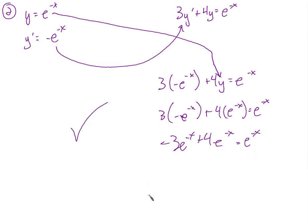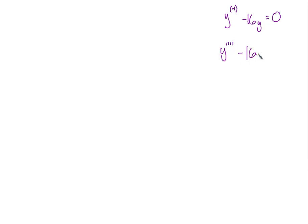Check — verified that it's a solution. Now for problems 13 through 16, we're trying to show whether each is a solution to y^(4) minus 16y equals 0. The notation y^(4) means the fourth derivative — at some point you stop using tick marks and use a number in parentheses to indicate the order of the derivative. This is a 4th order differential equation because the 4th derivative is involved.